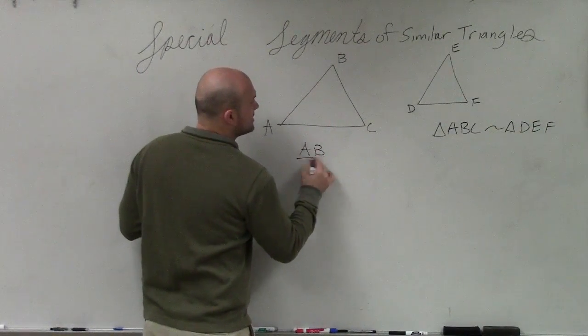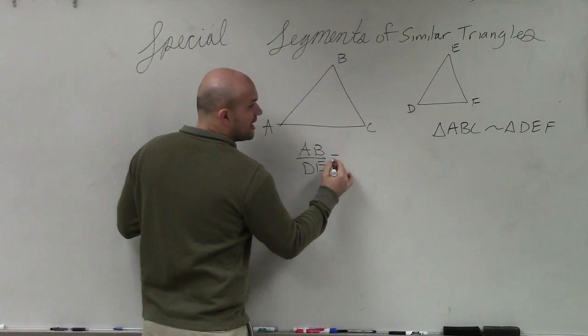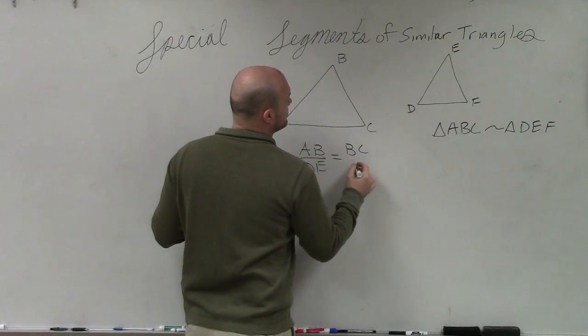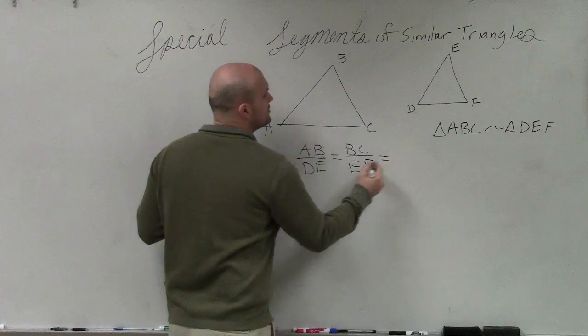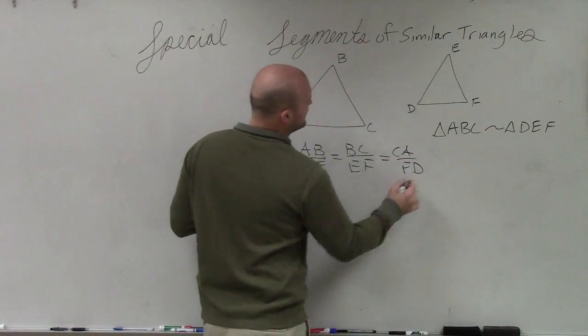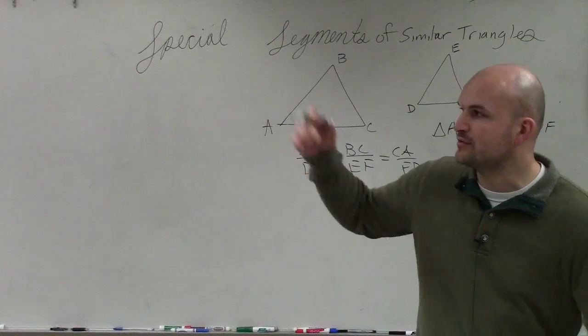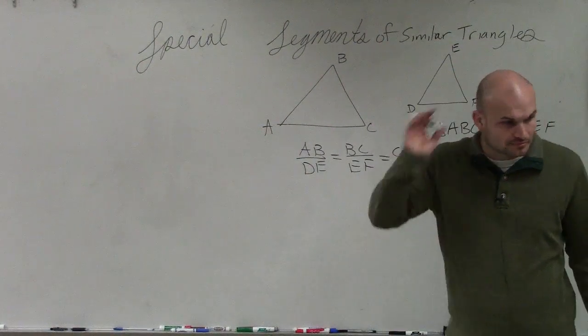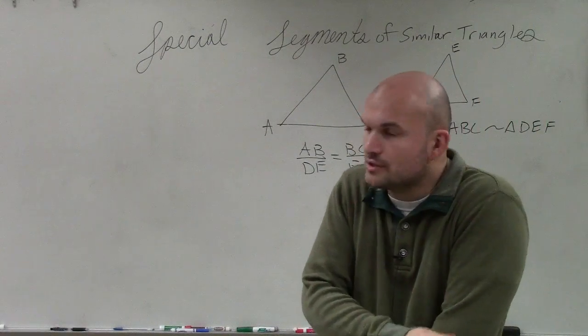Say AB is proportional to DE, right? And that is equal to the ratio of BC over to EF, which is also equal to the proportion of CA which is to FD. That's a little bit of review, right? And you guys need to know that. You can flip that over if you want to. So that's review. That's stuff you guys should remember from similar triangles.